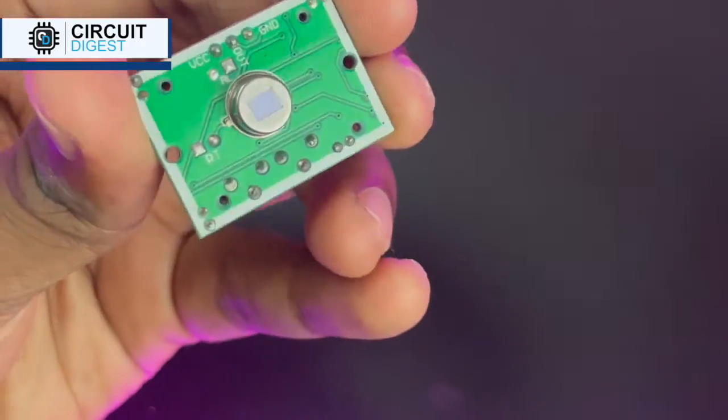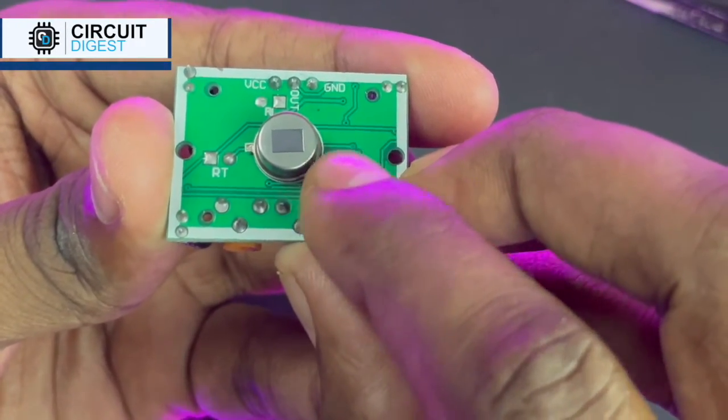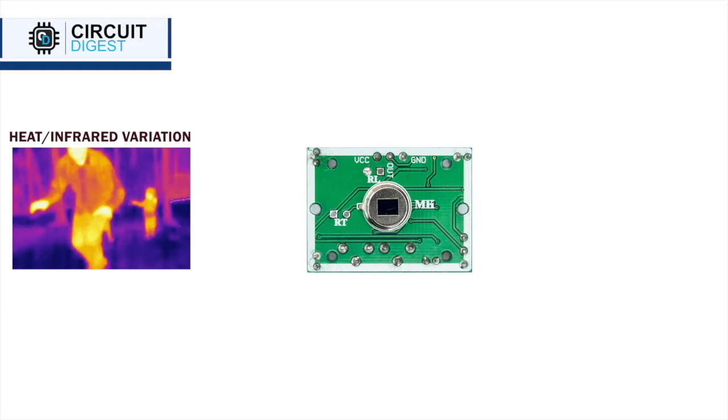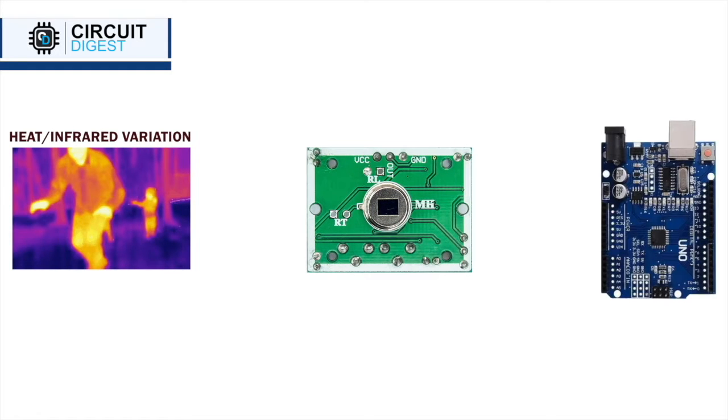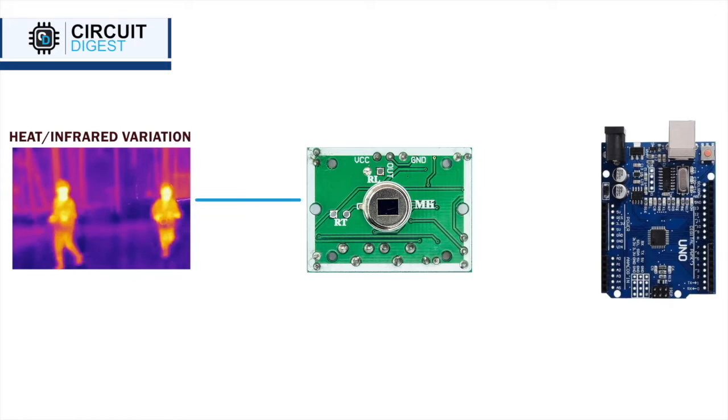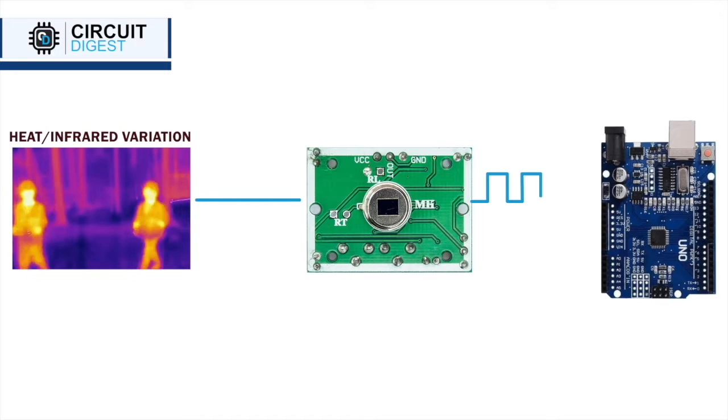On the front side of this circuit, the PIR sensor contains a pyroelectric sensor. This sensor can detect variations in heat or infrared radiation. When motion occurs, this sensor generates electrical pulses. These pulses are then processed to trigger an output signal which we can use to detect motion in our Arduino project.